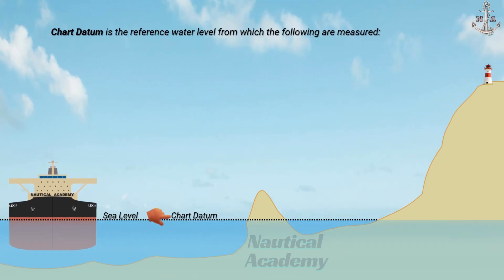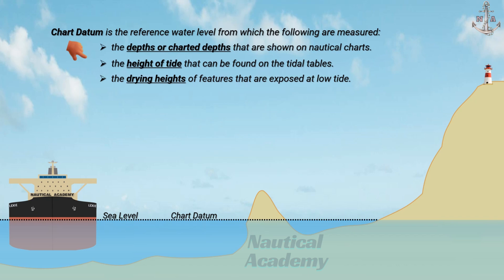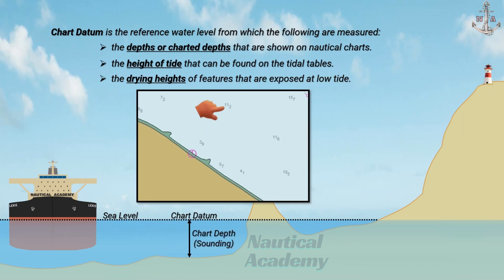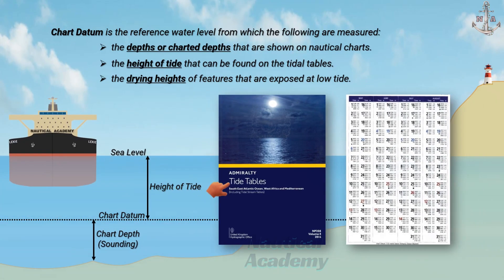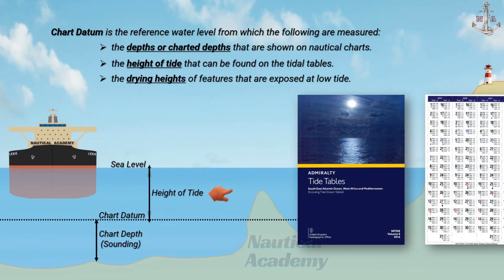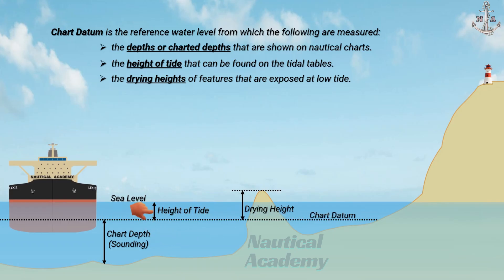Chart datum is the reference water level from which the following are measured: the depths or charted depths shown on nautical charts, the height of tide that can be found on tidal tables, and the drying heights of features that are exposed at low tide. The chart datum serves as the reference plane for measuring charted depth, height of tide, and drying height.